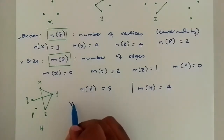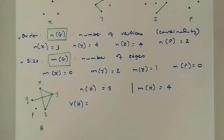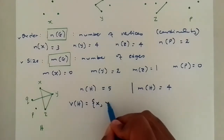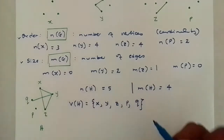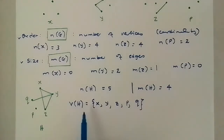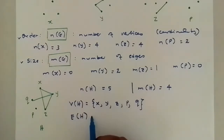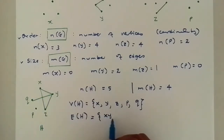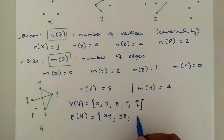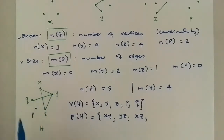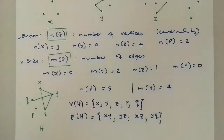If asked for the vertex set of graph H, you represent it as the set containing vertex X, Y, Z, P, and Q. For the edge set of graph H — the edges the graph has — we have edge XY, edge YZ, edge XZ, and edge YQ. So this is the vertex set and this is the edge set of graph H.